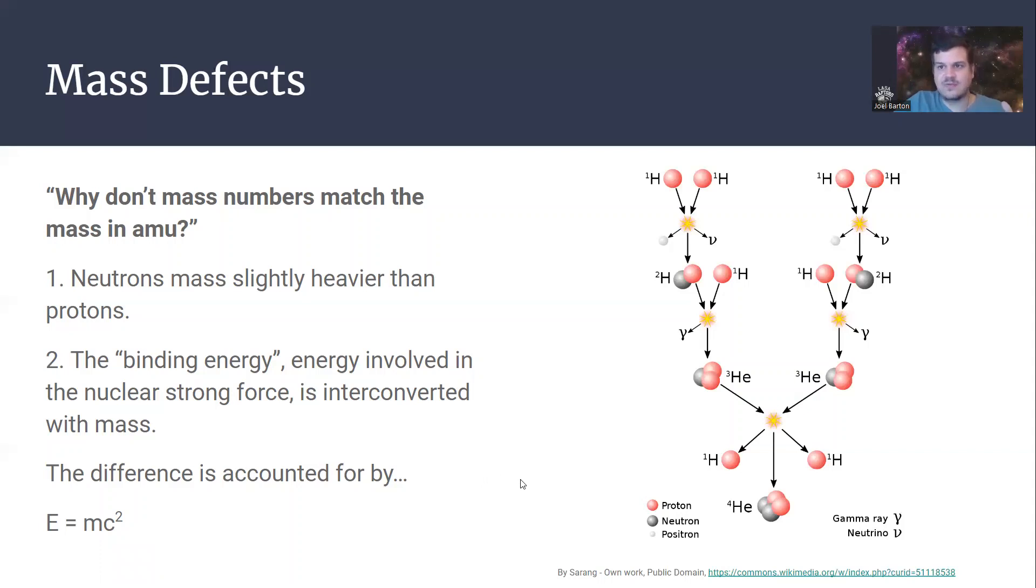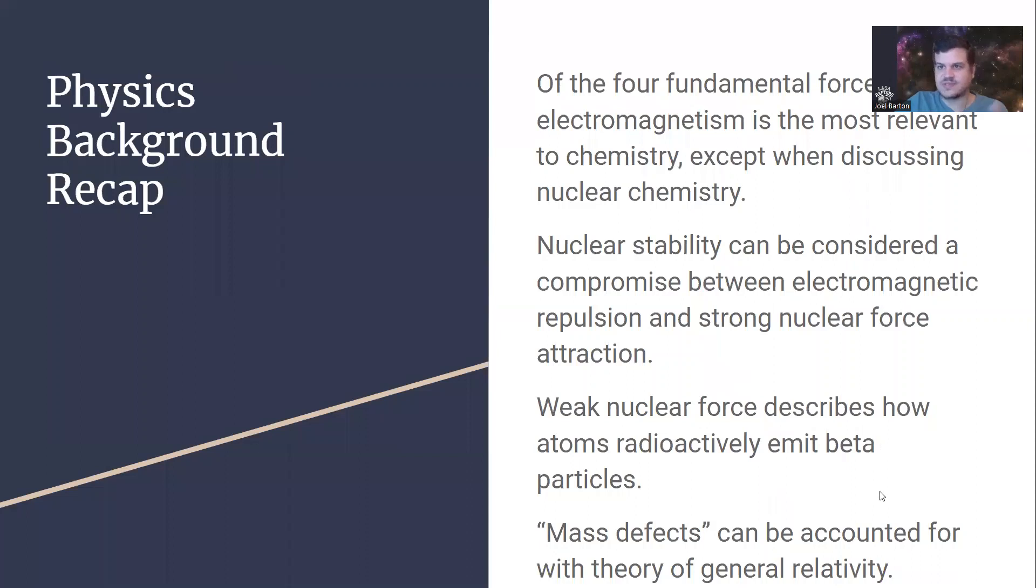If you'd never heard it before, this is an actual application of E equals MC squared, is that the mass difference or mass defect is explained as the binding energy of that nucleus. If you'd like to know more, I have it in the further resources on the next slide.